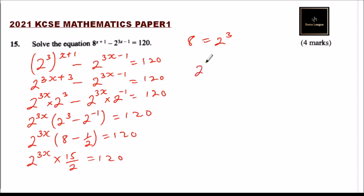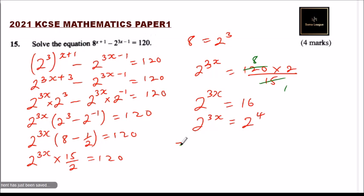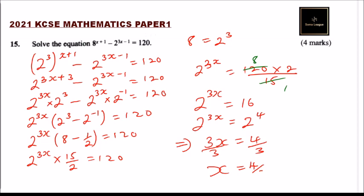Multiplying 120 by 2 and dividing by 15 gives 16. So 2^(3x) = 16, which means 2^(3x) = 2^4. Therefore 3x = 4, and dividing both sides by 3 gives x = 4/3. That is how you work out that question to get 4 marks.